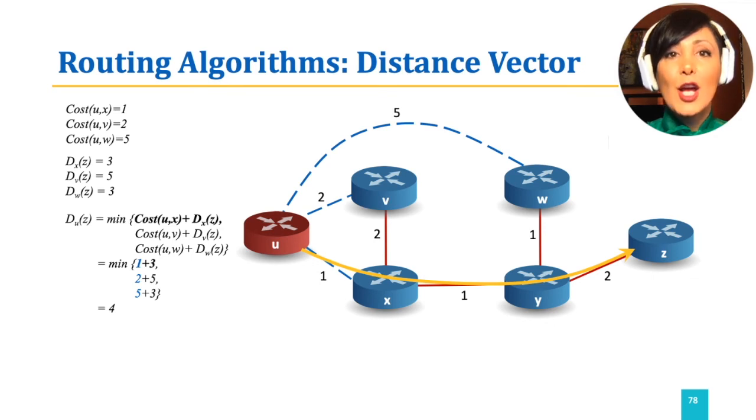Note that no information about other links in the network is exchanged. For example, no updates about direct links from v to w, x to w, or w to z ever provided to u. It is also important to note that those updates that u received also did not contain any information other than the cost of the path to destination from the neighboring node.